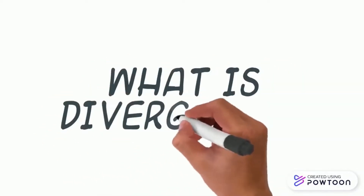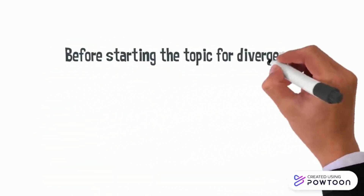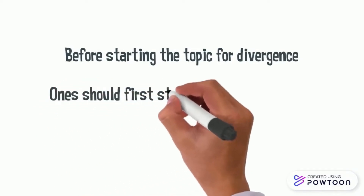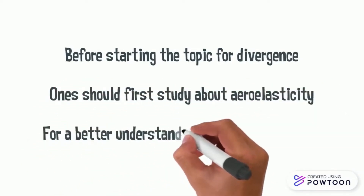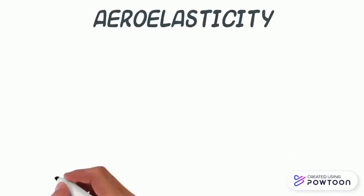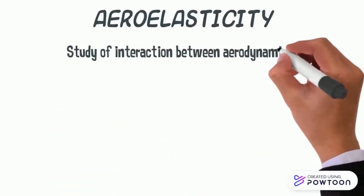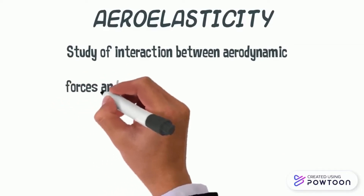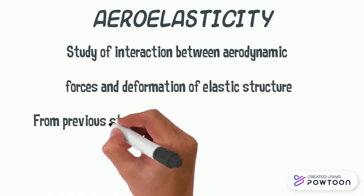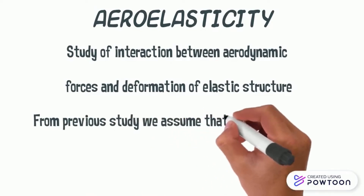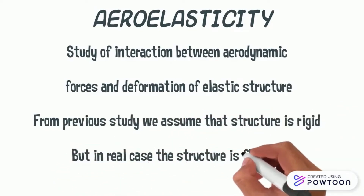This video will talk about what is divergence. Before starting the topic for divergence, one should first study about aeroelasticity. For a better understanding on this phenomenon, aeroelasticity is a study of the interaction between aerodynamic forces and the deformation of elastic structures. This is because from previous study we always assumed that the structure is rigid, however in real case, the structure is actually flexible.